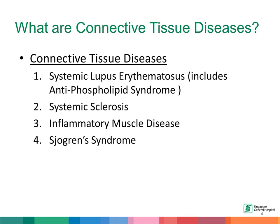These are the four important CTDs that we will discuss today. Firstly, systemic lupus erythematosus, and here we will include the antiphospholipid syndrome. Secondly, systemic sclerosis, also called scleroderma. Thirdly, inflammatory muscle disease, and finally, Sjogren's syndrome.